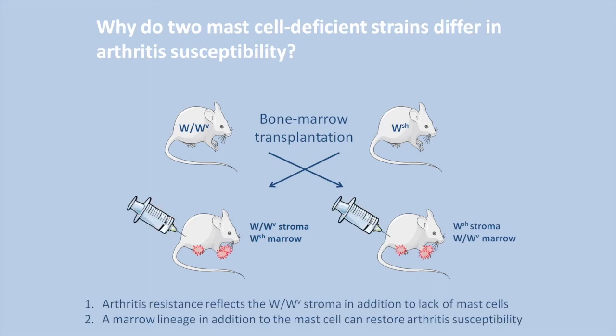Interestingly, WWV and SASH recipients became susceptible to arthritis. This finding shows that arthritis resistance in WWV mice reflects both marrow and stromal compartments. Further, it shows that a lineage from SASH donors, which are genetically unable to make mast cells, can patch the gap left by missing mast cells in WWV.